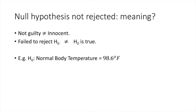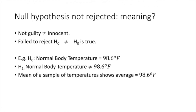For example, suppose that H₀ is that the normal body temperature equals 98.6 degrees Fahrenheit. Let's say that H₁ is that the body temperature is anything but 98.6 degrees. So we collect a sample of temperatures, and we find that the mean of that sample indeed turns out to be 98.6 degrees. Therefore, we fail to reject the null hypothesis. But we have not proved that H₀ equals true.